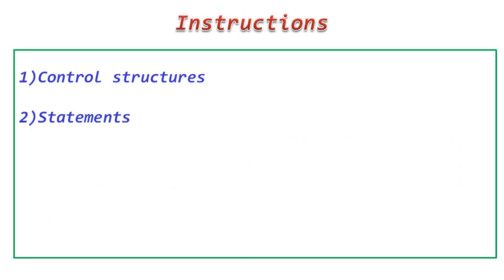The second part of programming is instruction. Inside instructions, there are two parts: one is control structure and the second is a statement.